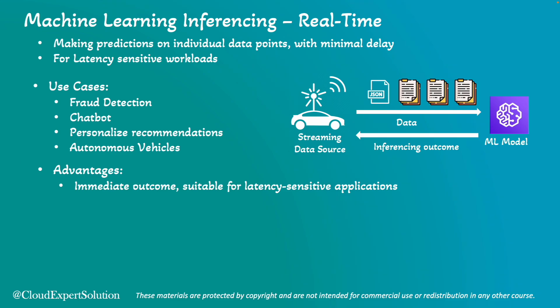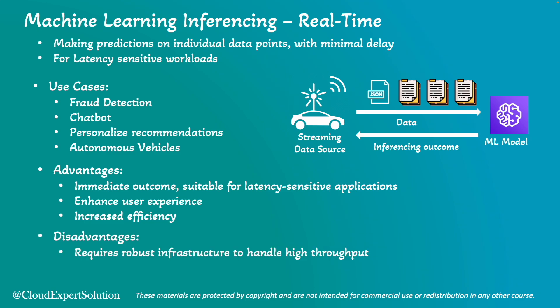Since real-time inferencing generates immediate outcomes, it is suitable for latency sensitive applications and enhances user experience by delivering instant feedback and personalized recommendations, significantly improving user engagement and satisfaction. Using real-time inferencing, an e-commerce platform can offer personalized product suggestions as users browse. It can also increase efficiency by optimizing operations and making quick adjustments based on real-time data. In terms of disadvantages, real-time inferencing requires robust infrastructure to handle high throughput, resulting in potentially higher costs and continuous operation requirements.